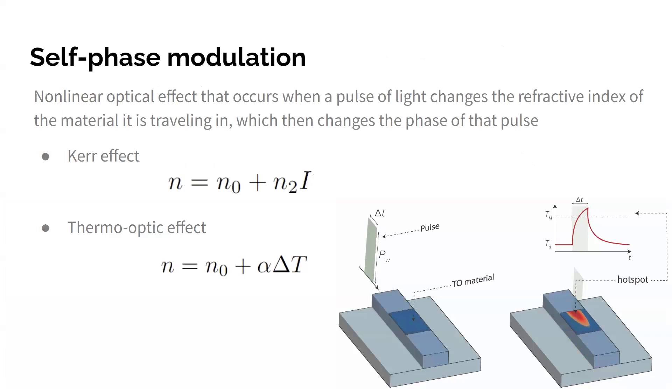So if we actually break that title down a bit more, self-phase modulation is the nonlinear optical effect that occurs if you have a pulse of light traveling in some material. That pulse of light changes the refractive index of the material, which then changes the phase of the pulse of light. The main way of doing this on chip is with the Kerr effect. That's where the refractive index n depends on the intensity I of the pulse.